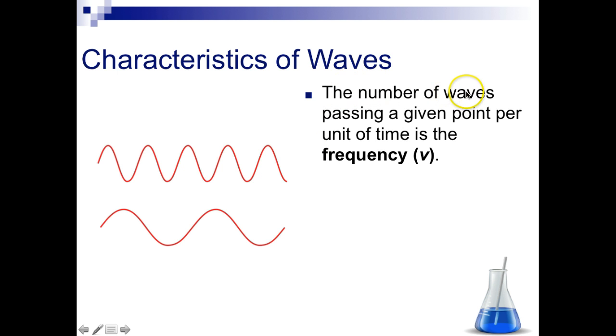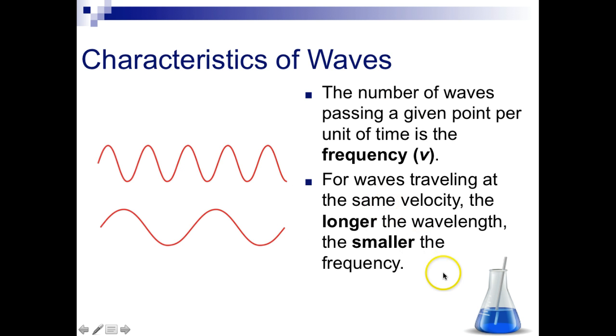So, the number of waves that pass a given point per unit of time is called frequency. So this top wave here has a high frequency, because there's more waves in this span of time than in the bottom one. The bottom one has a low frequency. So for waves that travel at the same velocity, the longer the wavelength, the smaller the frequency. So this wave at the bottom has a longer wavelength, so it has a shorter frequency.